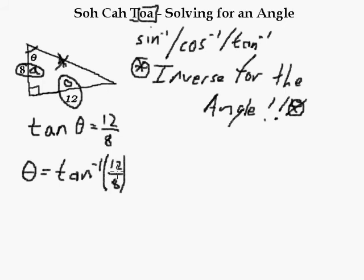Or, some calculators, you're going to have to do 12 divided by 8, and then hit second tan. That's what I'm going to have to do with this calculator here, the computer calculator. I do 12 divided by 8, and then hit equals, and then hit second tan. Or in the calculator on the computer, it's inverse tan.